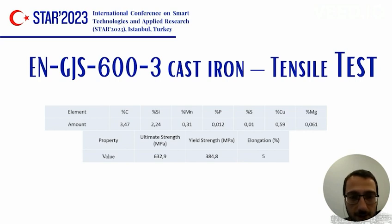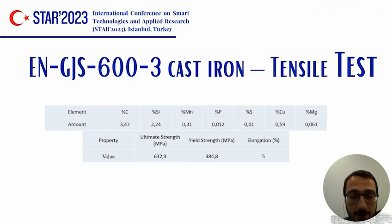In the standard of GGG60 ductile iron, ultimate tensile strength has to be higher than 600 MPa, yield strength should be higher than 380 MPa, and elongation should be higher than 5%. A tensile test has been done to obtain a Johnson-Cook material model.